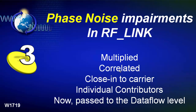Spectrasys allows correlated and multiplied noise sources. So when you have a local oscillator that is also multiplied up, the phase noise of those two sources — the original and the multiplied version — are in fact correlated. You can have close-in-carrier phase noise, and Spectrasys does maintain individual contributors so that you can diagnose the individual contributions later.